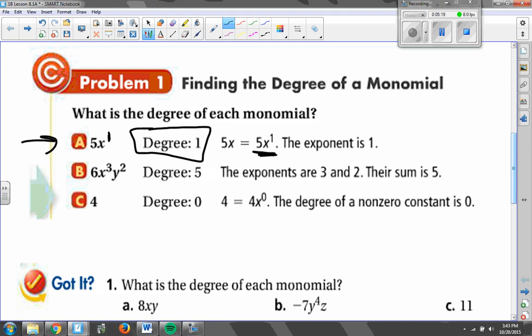In the next example, things get a little bit more complicated. 6x to the third, y to the second. I see two letters there, and I see two different exponents on them, the 3 and the 2. So I will add those together. 3 plus 2, and my degree is 5. 3 plus 2, my exponent on the x plus the exponent on my y.